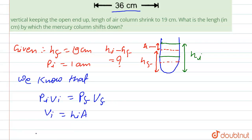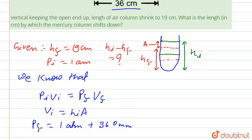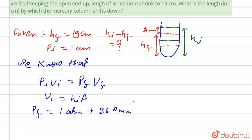So P_f is equal to 1 atm plus 360 mm. It is given that 36 cm so we can consider as 360 mm. First we have to know standard pressure of air with mercury is 760 mm of Hg, so we divided by 760 mm. So we got final pressure is 112 atm upon 76.